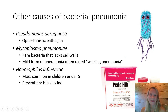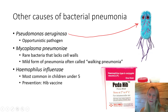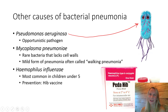Pseudomonas aeruginosa is usually an opportunistic pathogen — in healthy people it normally doesn't cause disease. We actually use Pseudomonas in the microbiology laboratory, which tells you it's generally not pathogenic, only in people who are immunocompromised.